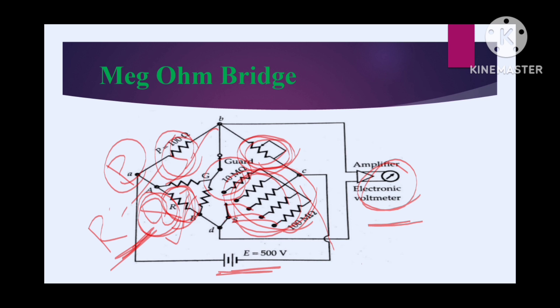This is about the megohm bridge method. By means of this megohm bridge we can measure high resistance values with a specified accuracy. In the next video, we shall discuss the next method of measuring high resistance — the megger. For more videos, please subscribe and share. Thanks for watching.